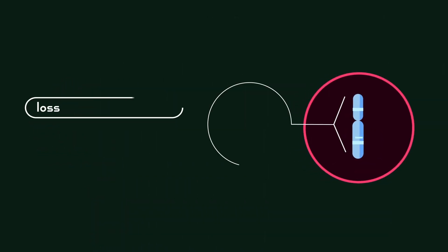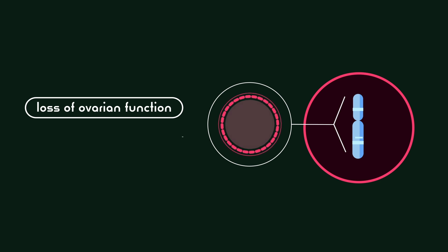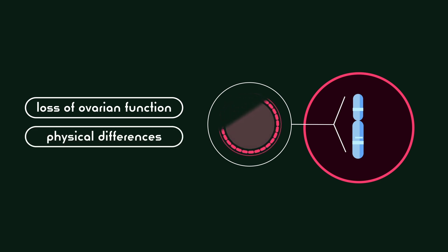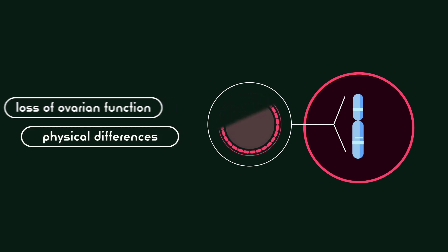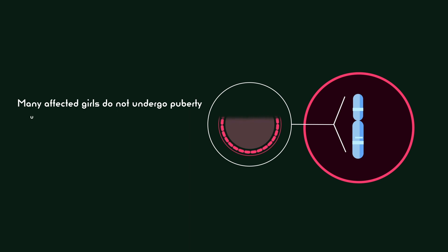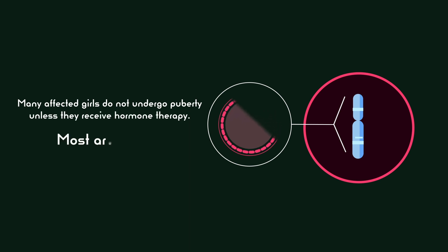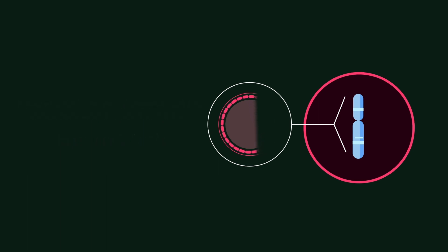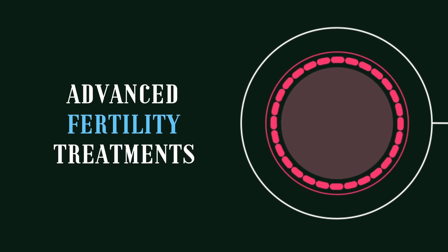The missing X chromosome most commonly results in a loss of ovarian function and unique physical differences. Many affected girls do not undergo puberty unless they receive hormone therapy, and most are infertile. Only a small percentage of females with Turner Syndrome retain ovarian function, and an even smaller percentage are able to conceive with advanced fertility treatments.